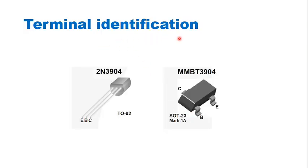Next is terminal identification. There are two types of transistor packaging. In the first type of packaging, the emitter is on the left side, the base is in the middle, and the collector is on the right side. In the second type of packaging, the base is on the left side, the emitter is on the right side, and the collector is at the back.